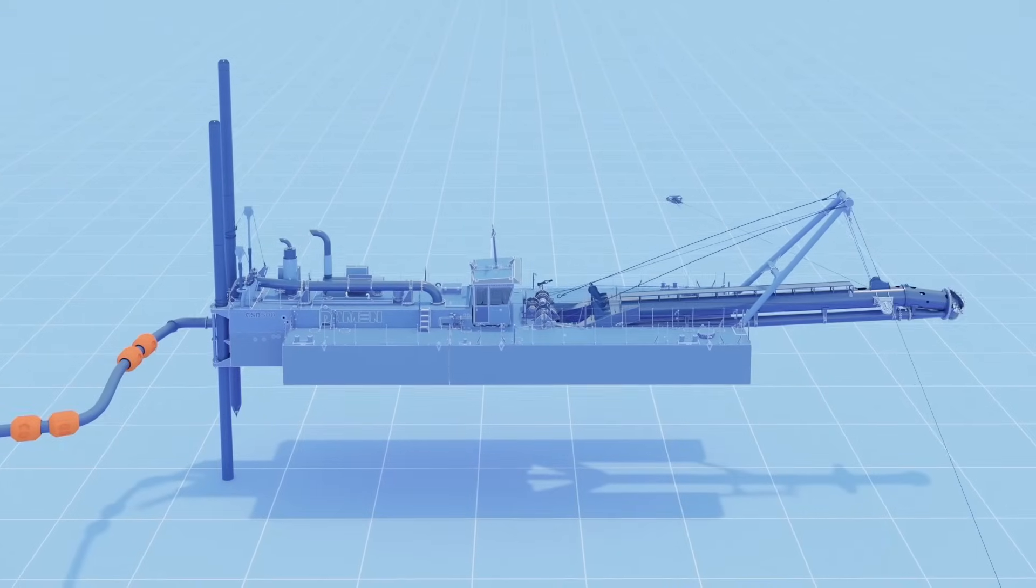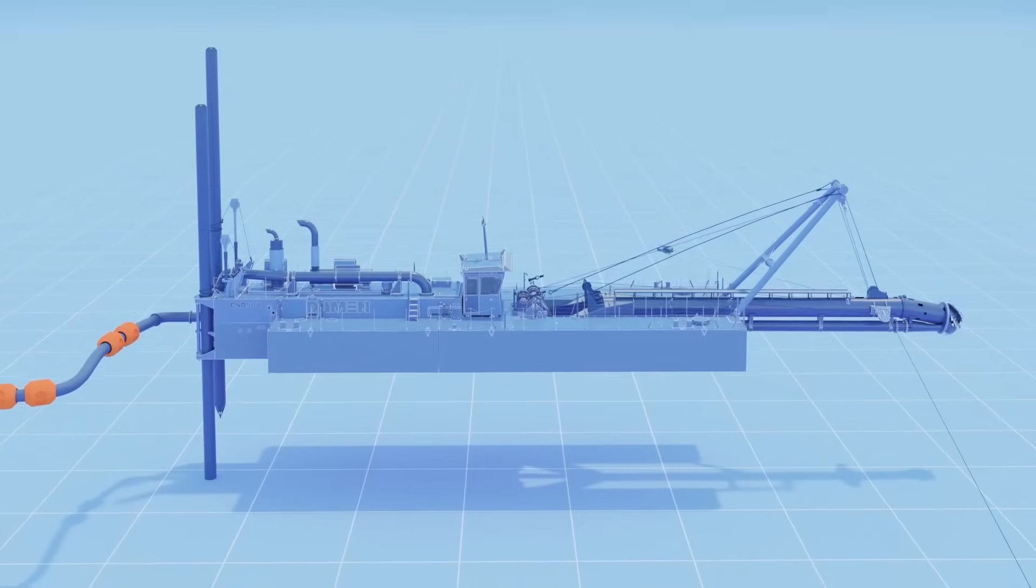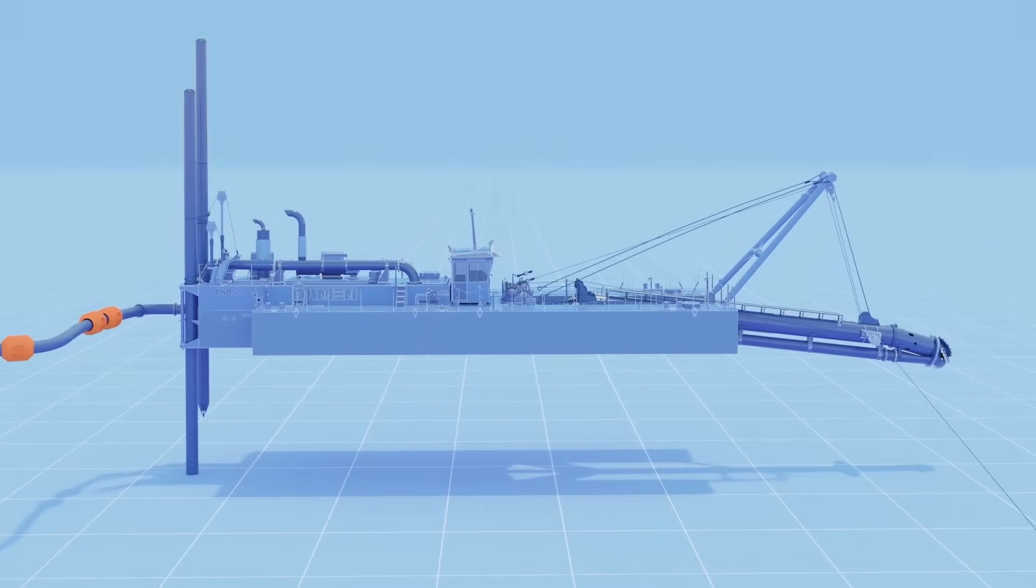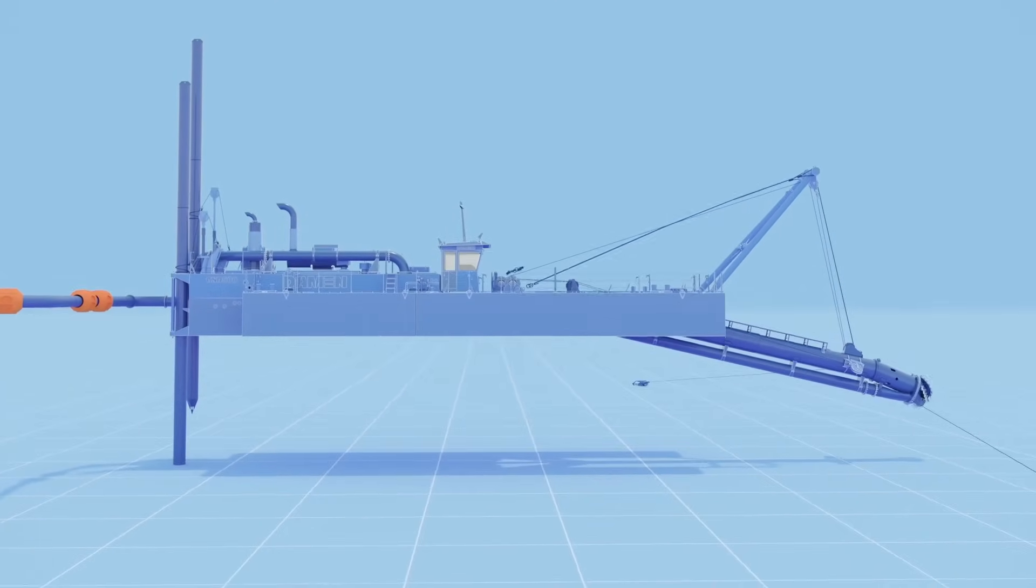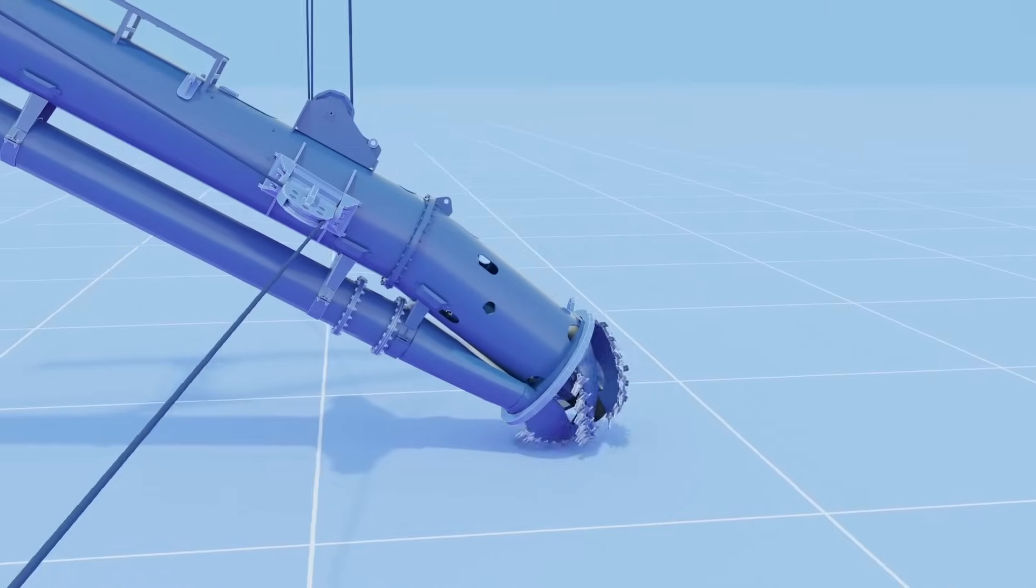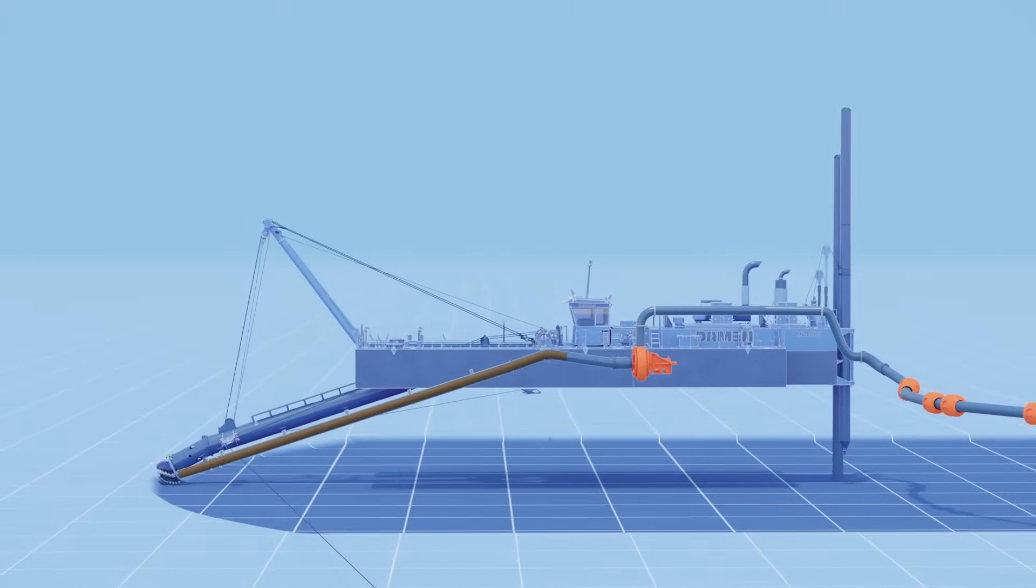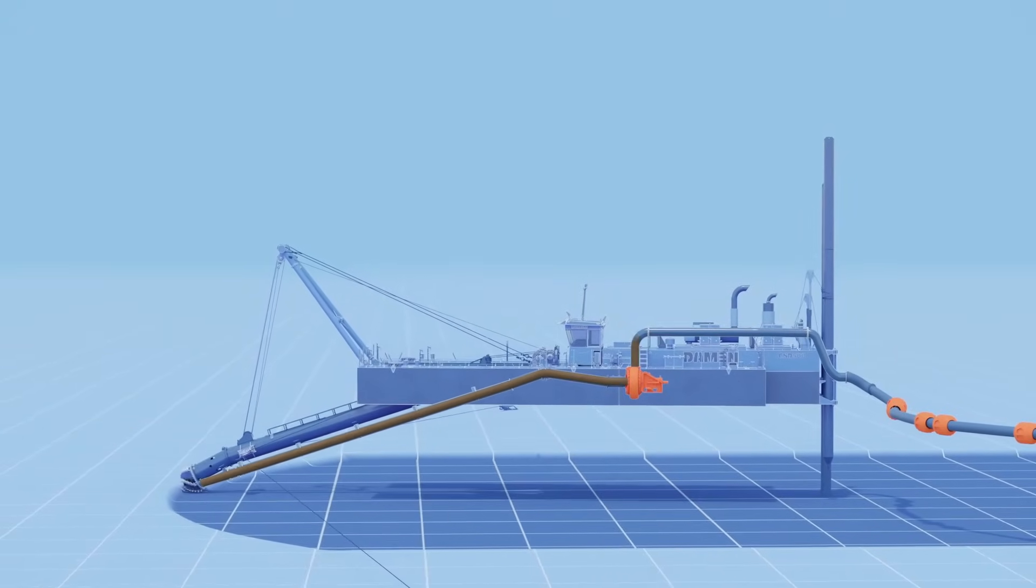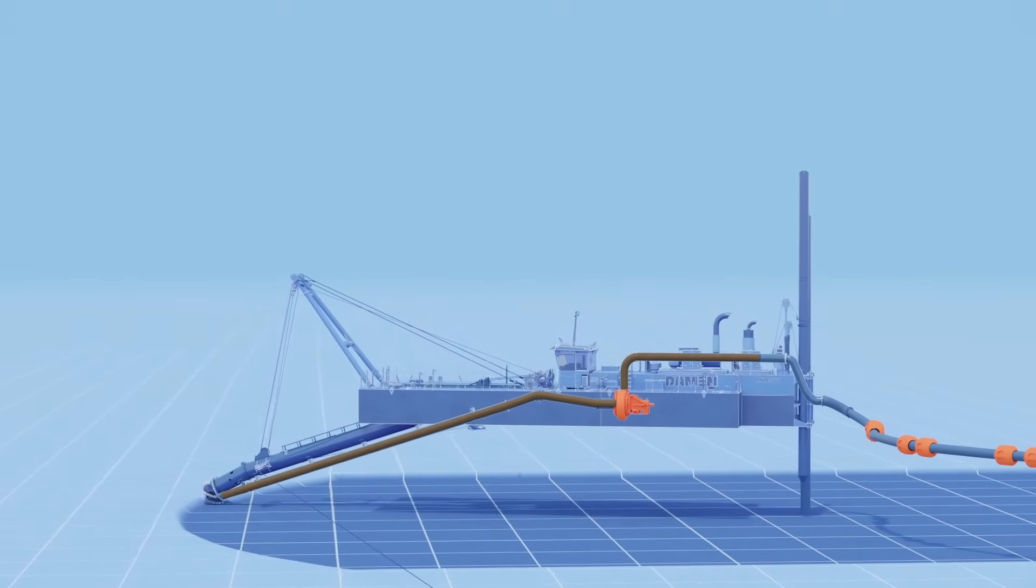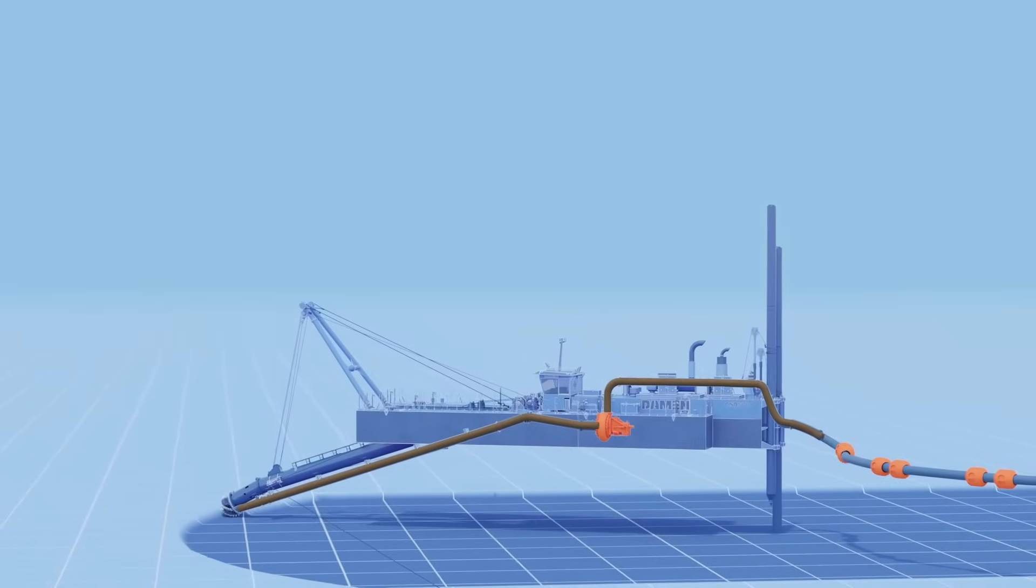Of course, the most important work happens underwater, controlled by the operator from inside the control cabin. He starts by lowering the ladder. Now the cutter head can do its work, loosening soil from the bottom. A dredge pump sucks the loosened material through the suction pipe and discharges it.